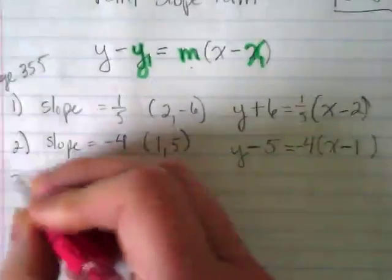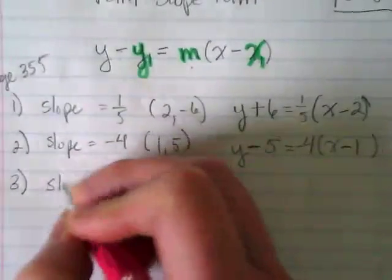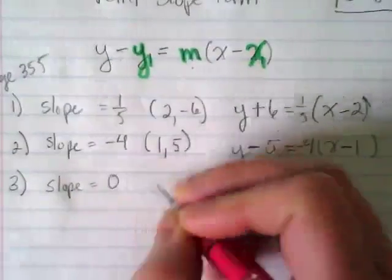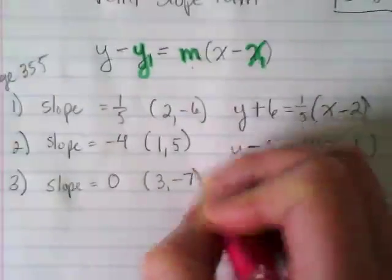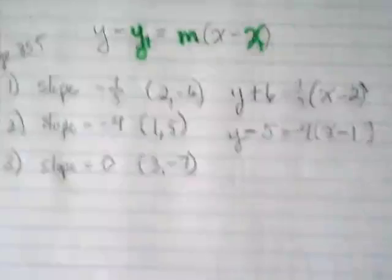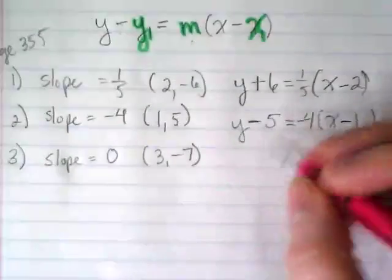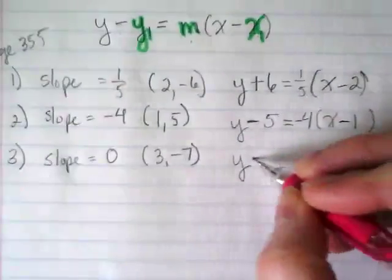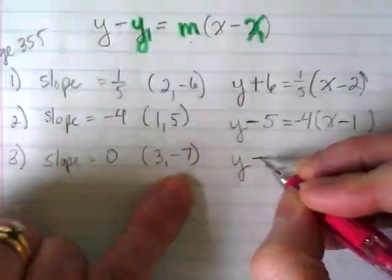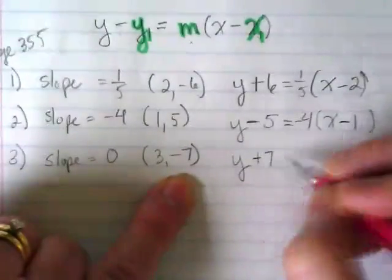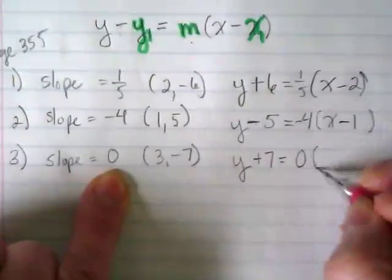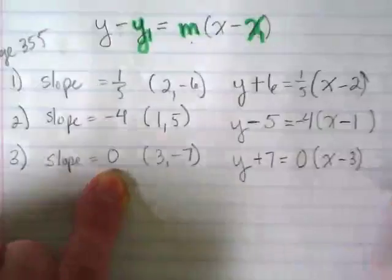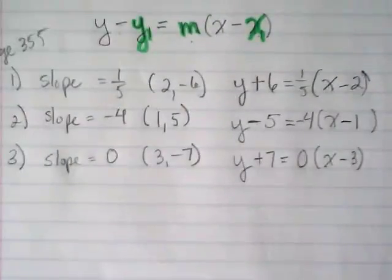Number three: slope is zero, and the ordered pair is three comma negative seven. Y minus negative seven is going to become a positive seven, equals a slope of zero times X minus three.